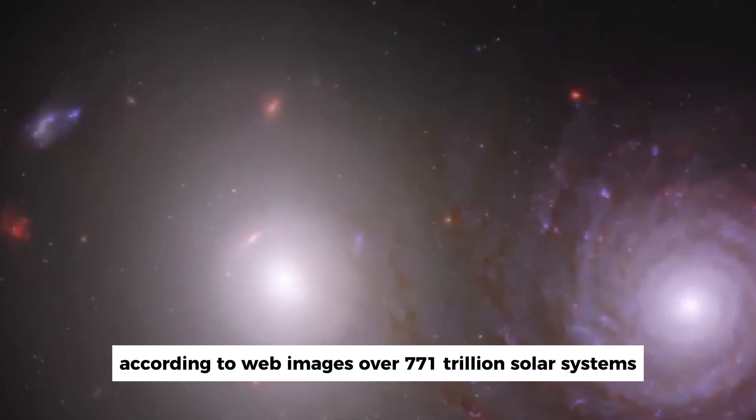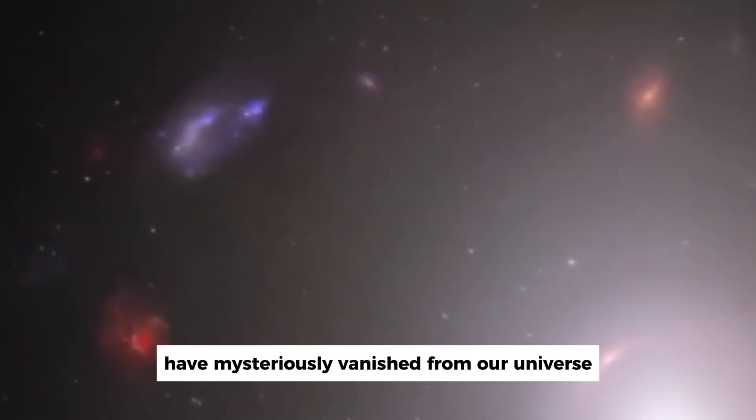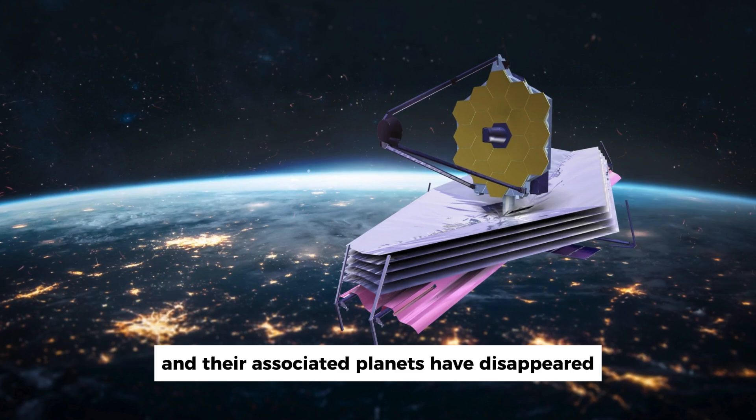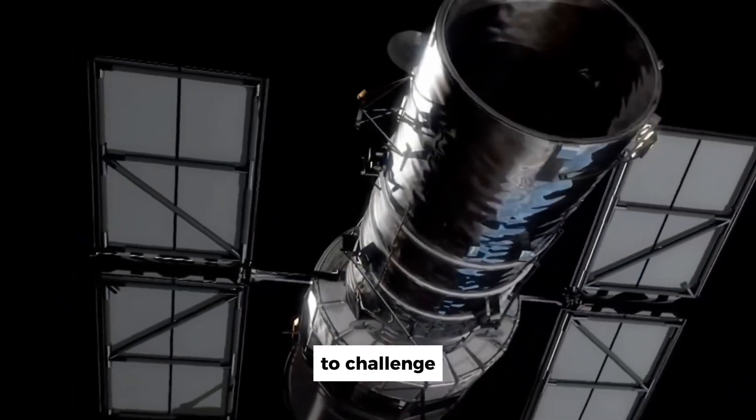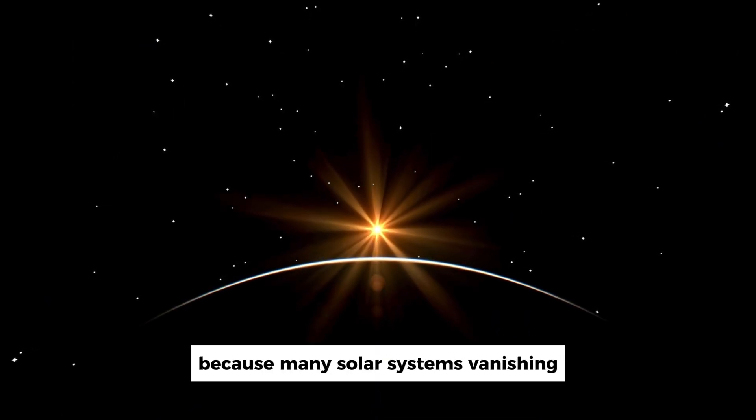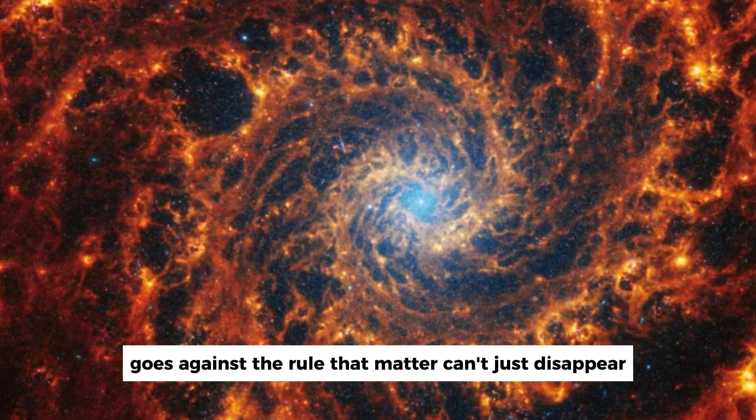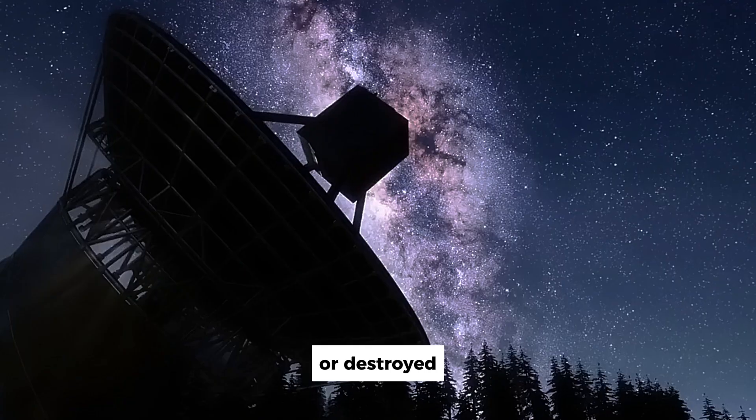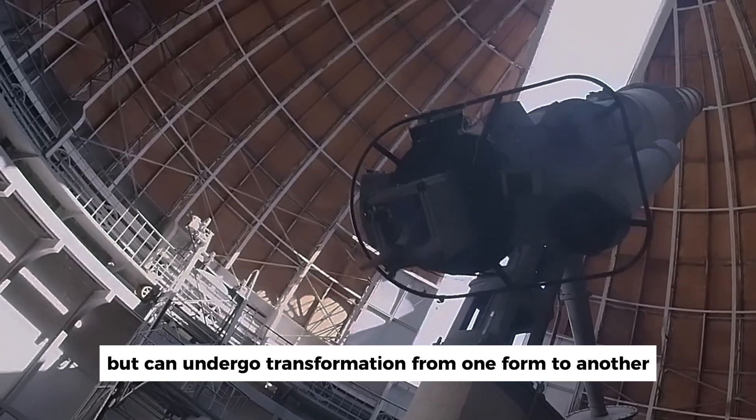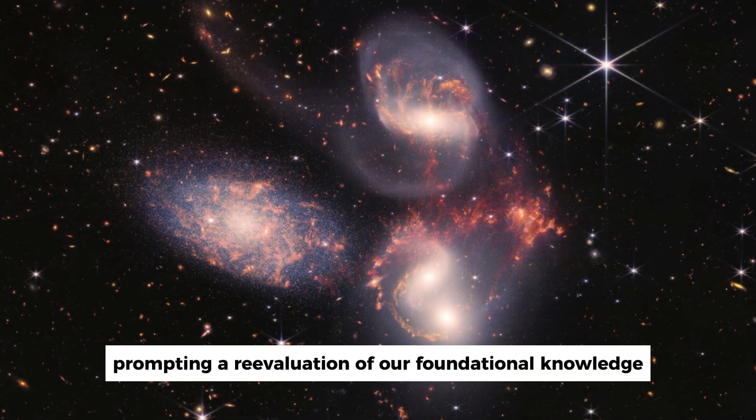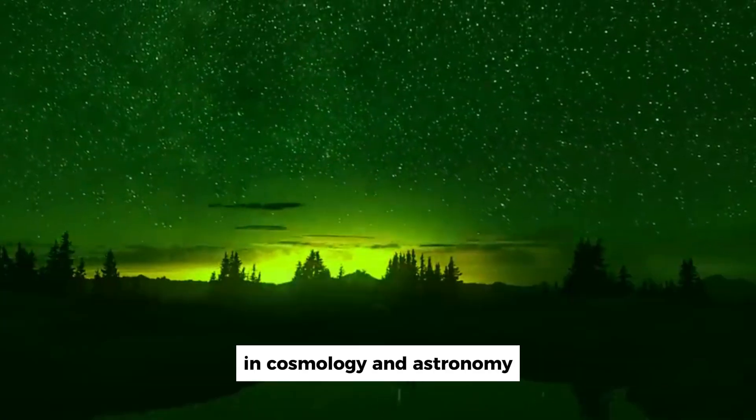According to Webb images, over 771 trillion solar systems have mysteriously vanished from our universe. This means that an immense number of stars and their associated planets have disappeared, presenting an unprecedented event. What makes this discovery even more interesting is its potential to challenge our fundamental understanding of cosmology. Scientists are now doubting the Big Bang theory because many solar systems vanishing goes against the rule that matter can't just disappear.